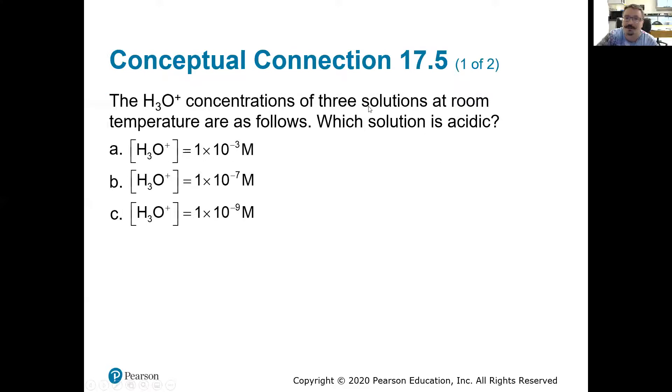So H3O concentrations of three solutions at room temperature are as follows. Which solution is acidic? So we have these three examples here. If you wanted, we could actually work this out. We could figure out what exactly is the basic concentration. So if the H3O concentration for 1 was 1 times 10 to the negative 3, we know that the H3O plus ion times the OH minus ion has to equal 1 times 10 to the negative 14.